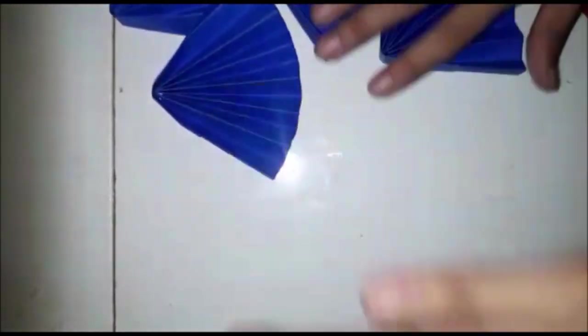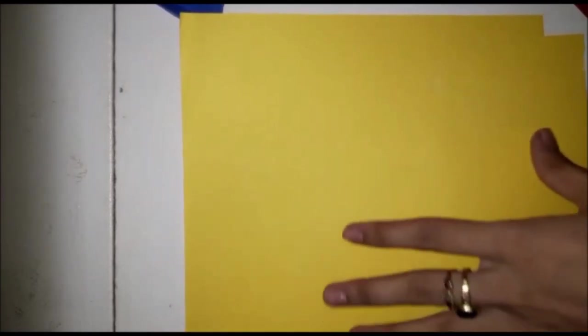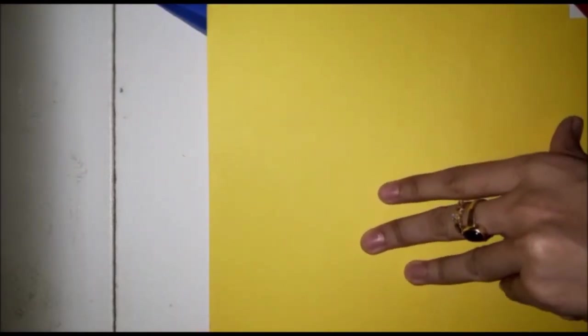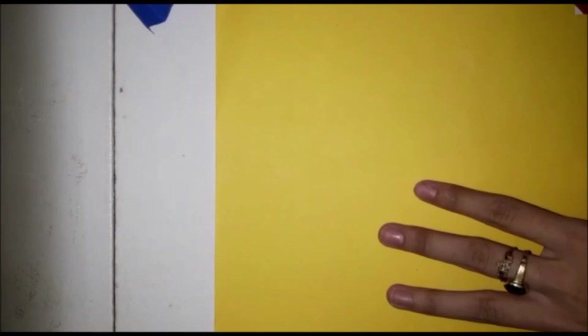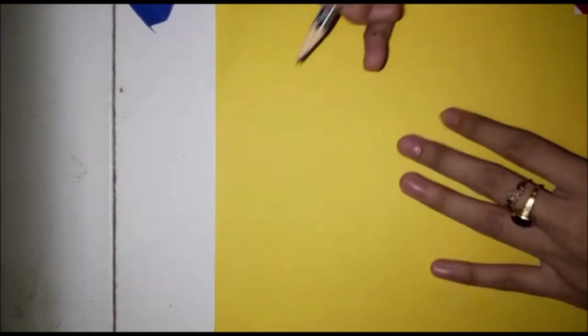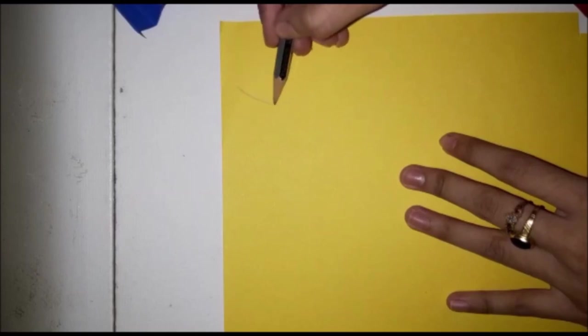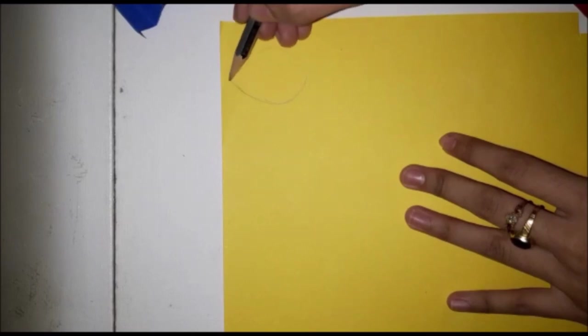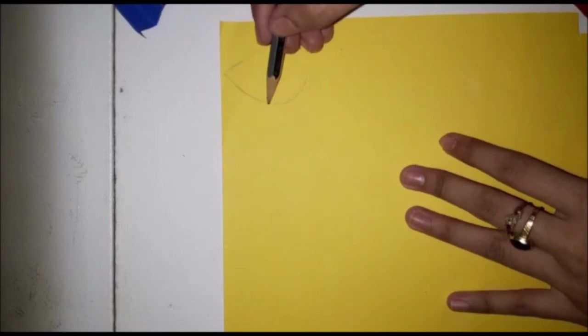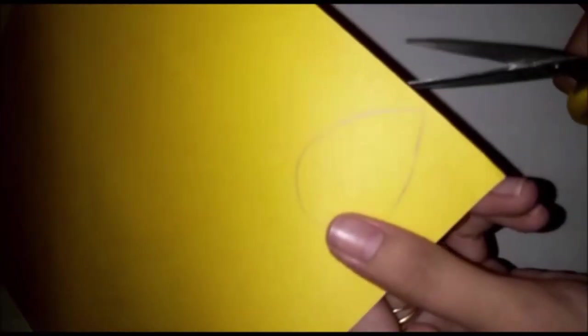What next? Now we will make flame, and for flame we will use yellow sheet. Or if you don't have yellow sheet, you can use red, you can use orange, any yellow or red sheet. So first we will draw a flame with pencil. Now cut it.